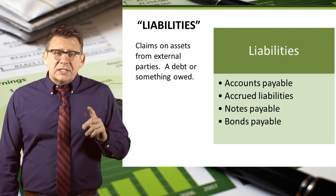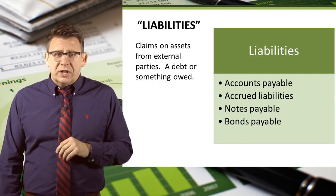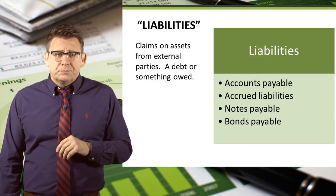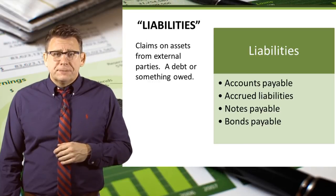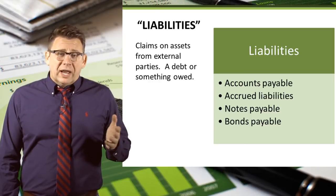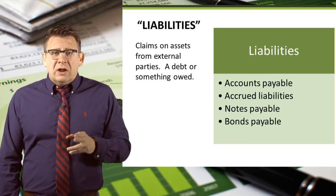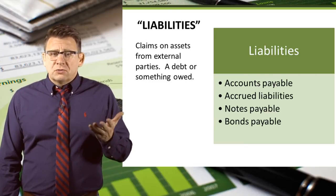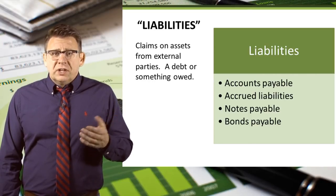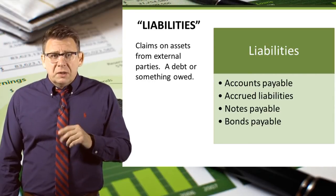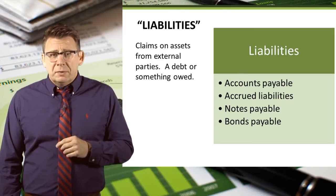Liabilities are claims on our assets from external parties, like creditors. Accounts payable is for money that we owe to our vendors or suppliers. Accrued liabilities, sometimes called accrued expenses, are amounts that we owe for our bills related to operations. For example, utility bills received but not yet paid is a type of accrued liability.